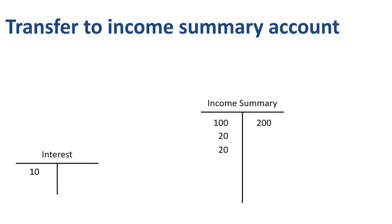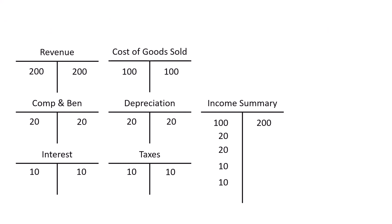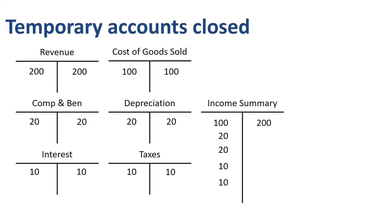Interest expense has a debit balance of 10. We need to record a credit of 10 to interest expense, and a debit of 10 to the income summary account, in order to make the net account balance in interest expense zero. Provision for income taxes has a debit balance of 10. We need to record a credit of 10 to provision for income taxes, and a debit of 10 to the income summary account, in order to make the net account balance in provision for income taxes zero. All our temporary accounts are now closed — their balances are reset to zero, and the balances were transferred to the income summary account.